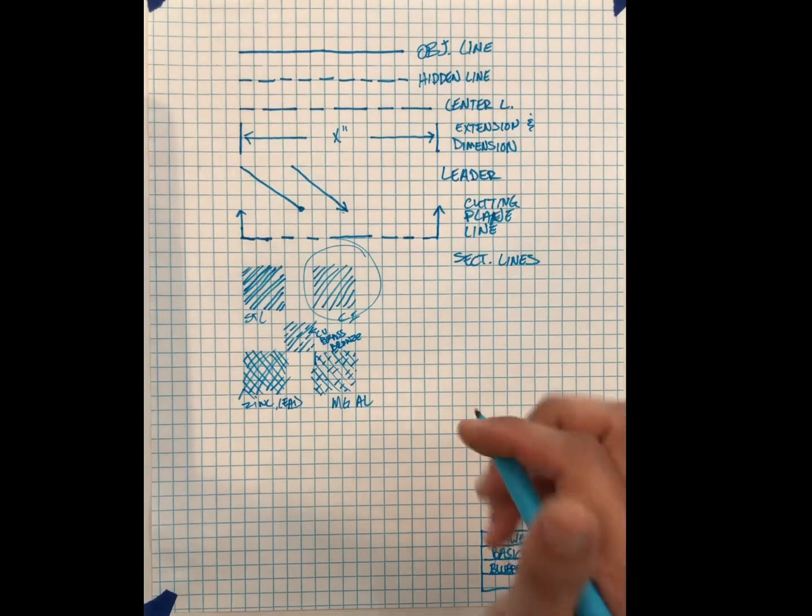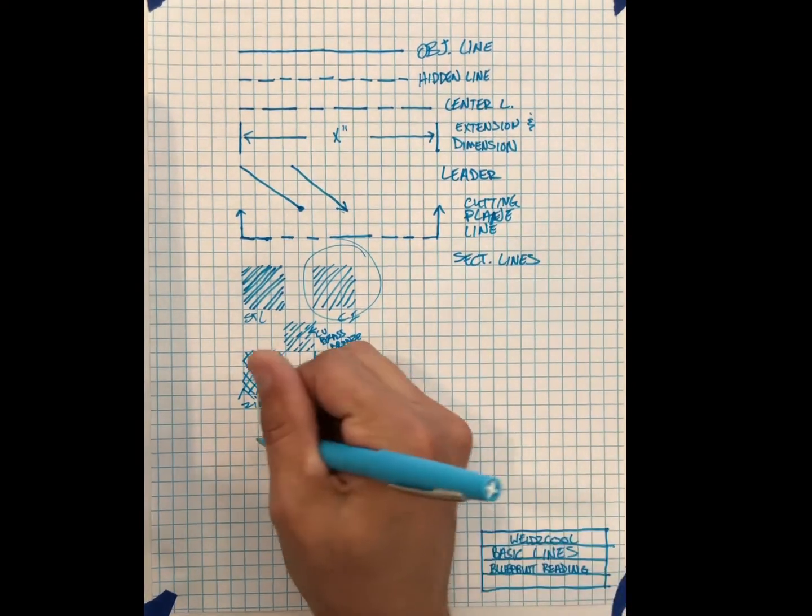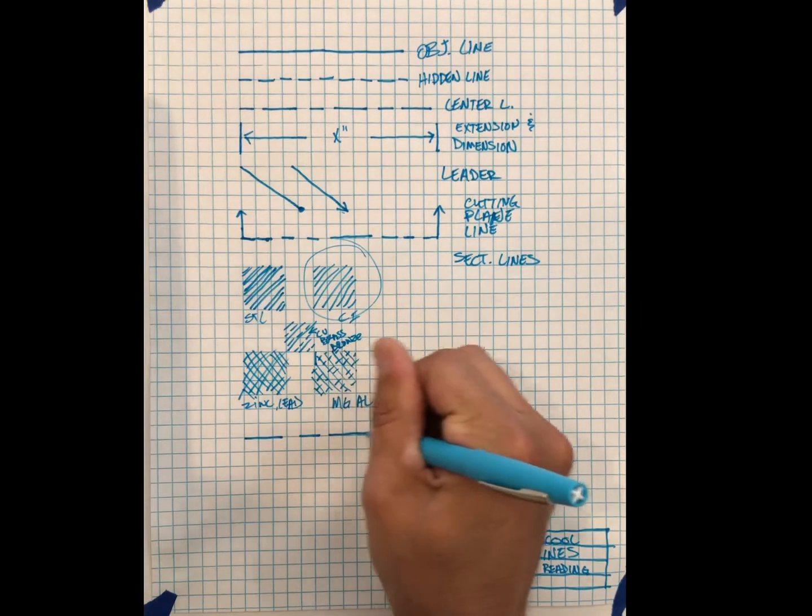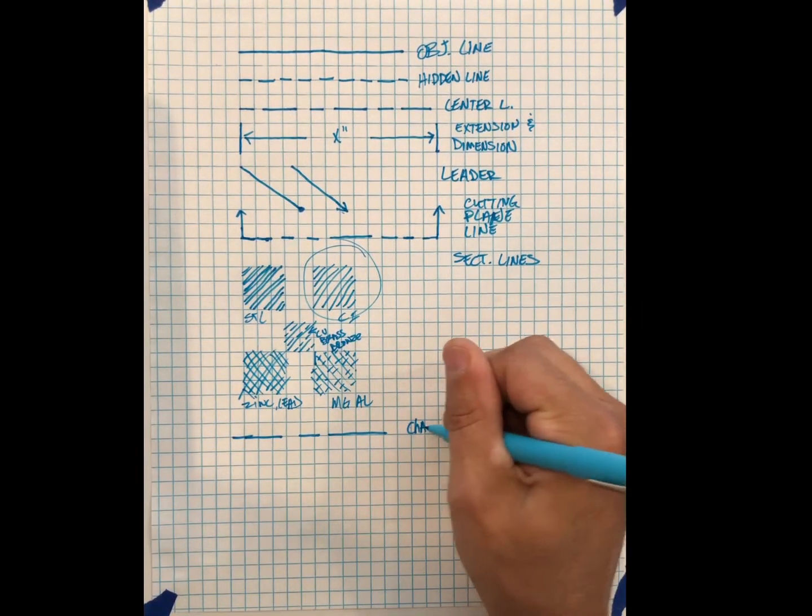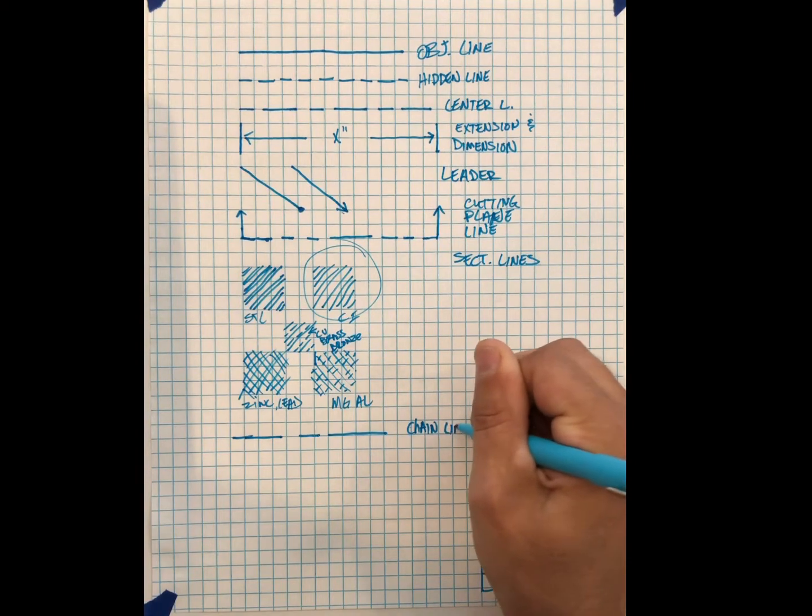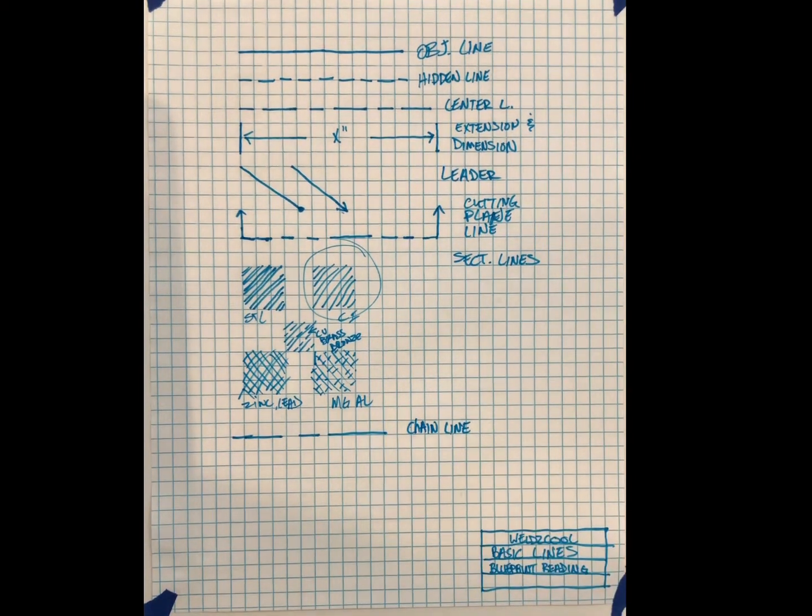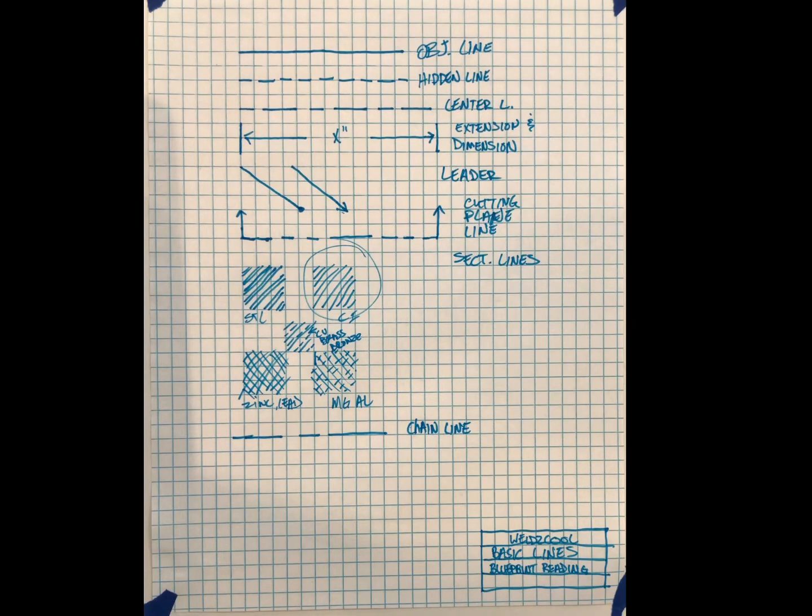Let's continue on. A chain line is something that's long, short, long. And a chain line can be used to indicate the location or extent of a surface.